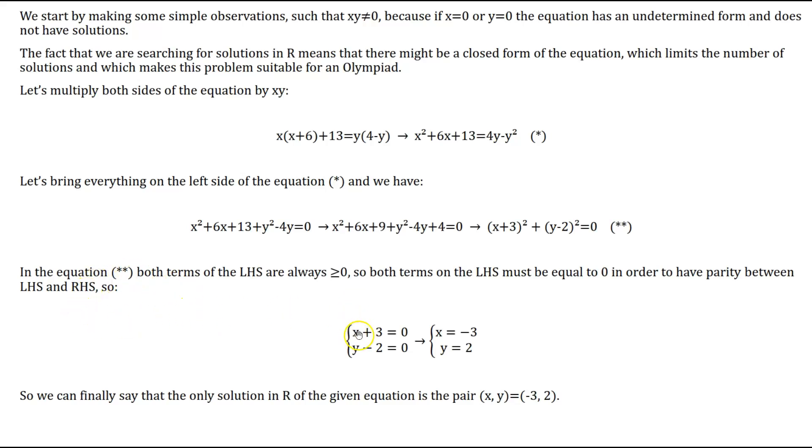We should have x + 3 = 0 and y - 2 = 0. This gives the only solution of the problem: x = -3 and y = 2. So we can finally say that the only solution in the set of real numbers of the given equation is the pair (-3, 2).